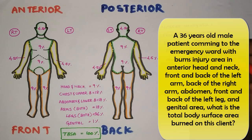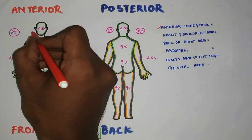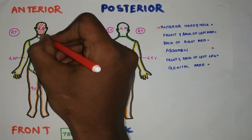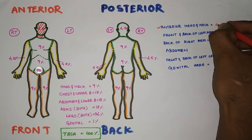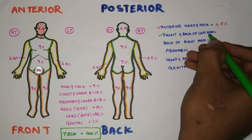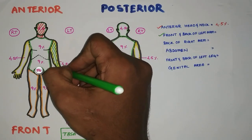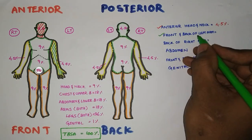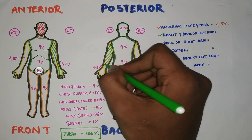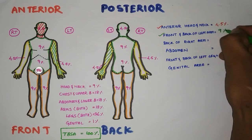First, they said about the anterior head and neck — that is the anterior view of the head and neck — so 4.5%. Next, they said front and back of the left arm: the front left arm is 4.5% and the back of the left arm is also 4.5%, giving totally 9% for the left arm.